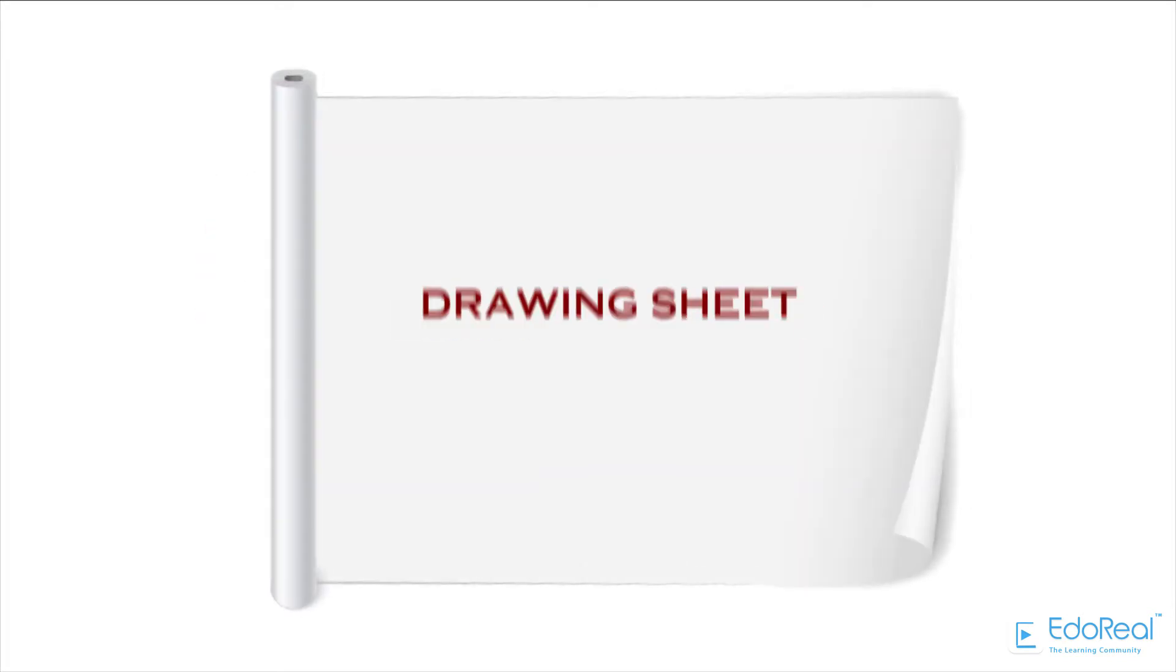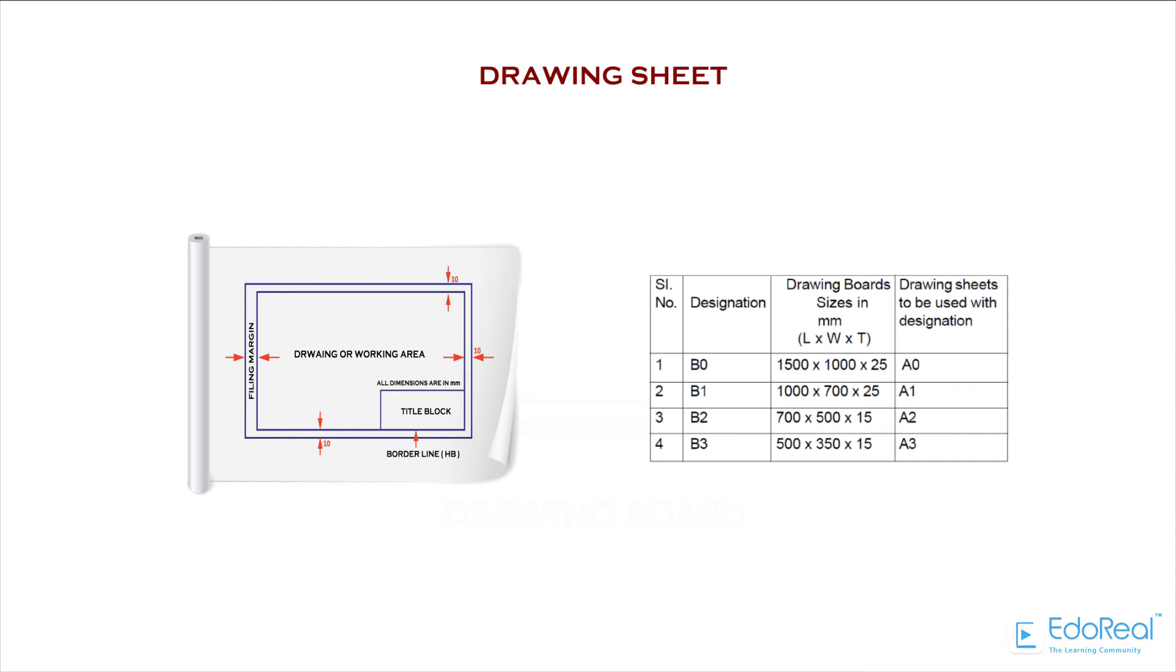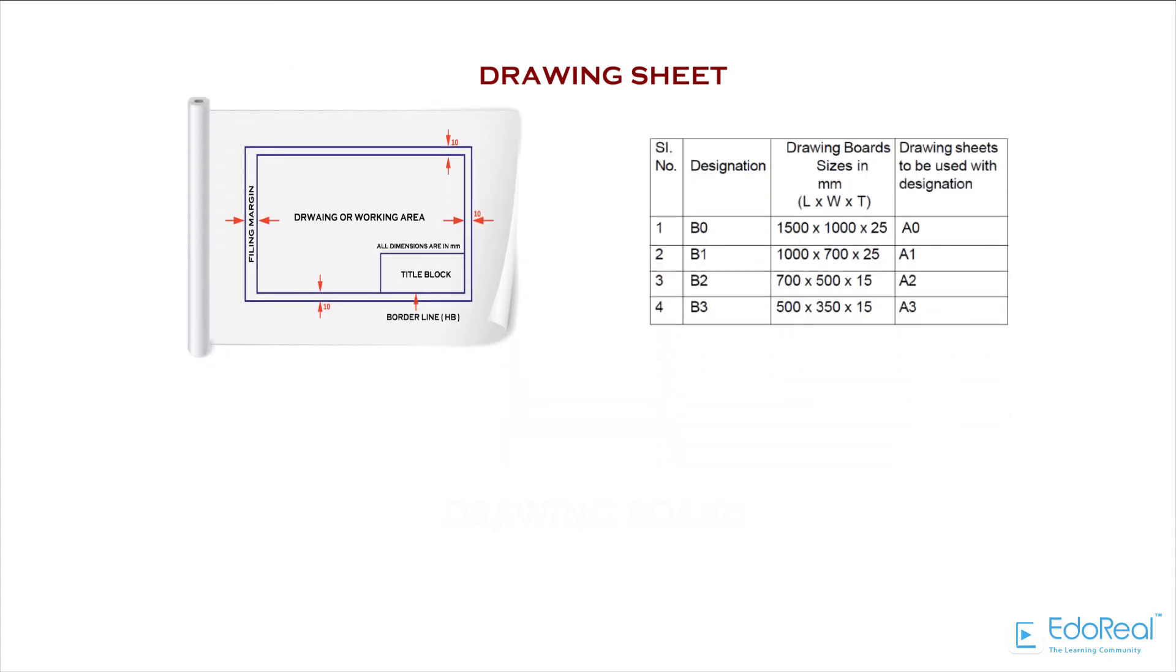Drawing sheet is a white paper on which an object is drawn, which is available in various sizes. To fix the drawing sheet to the board, clamps, plasters, and paper holders are used.